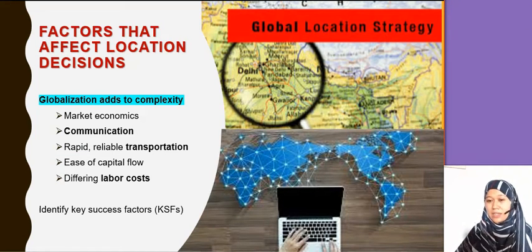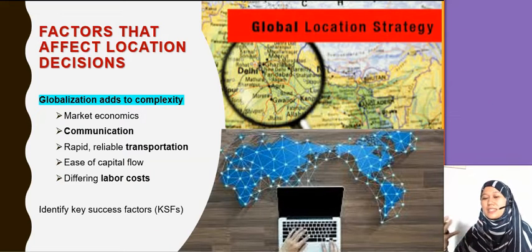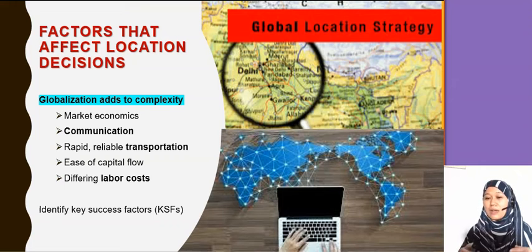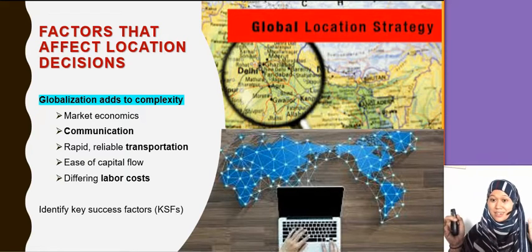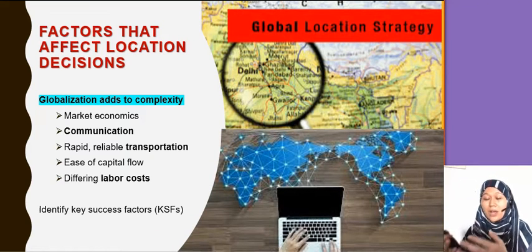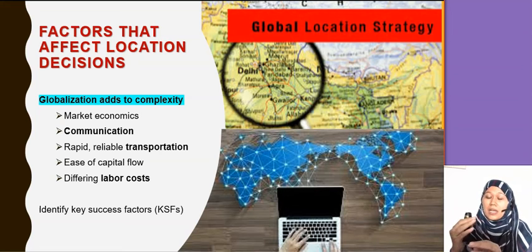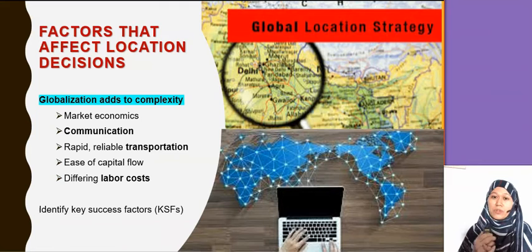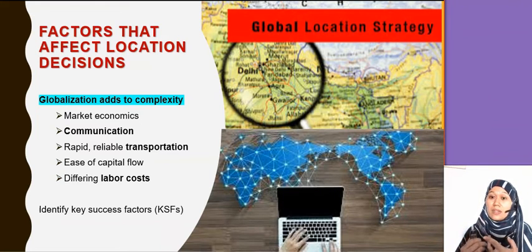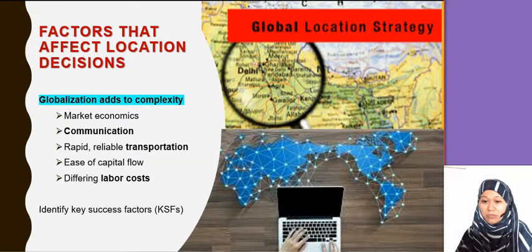Factors that affect the location decision — kita dah tengok tujuh tadi. Why do companies decide to go out? Because of globalization. For example, iPhone — the company headquarters is in California but the factory is in China, because the labour cost is low there and all the parts for iPhone are nearby — from Korea, Malaysia, Taiwan. So they decided to open the factory in China. Communication, transportation, and labour cost are the key drivers, and because of labour cost, most big companies have chosen Asia for their manufacturing.